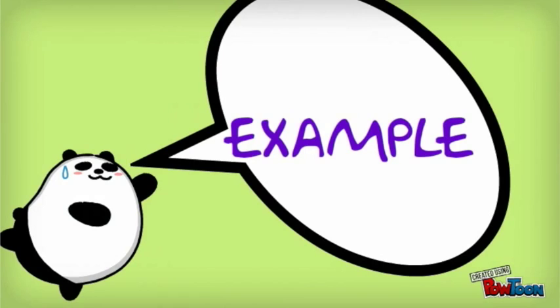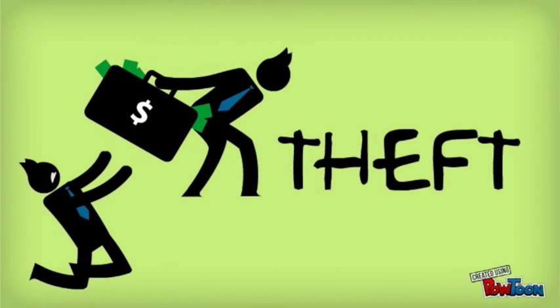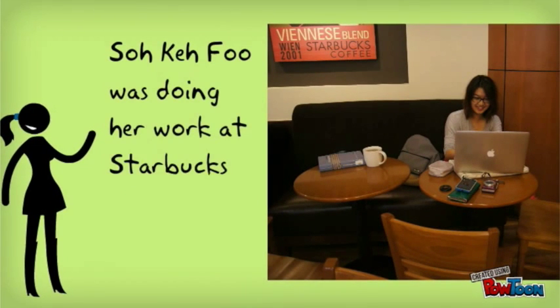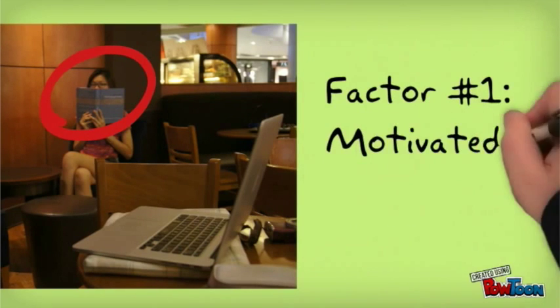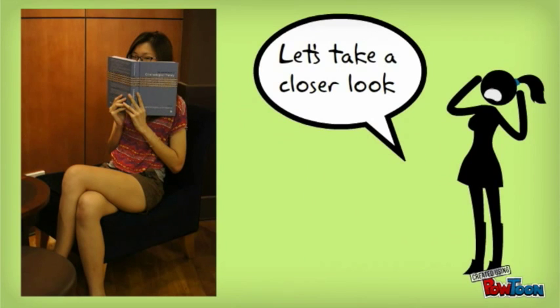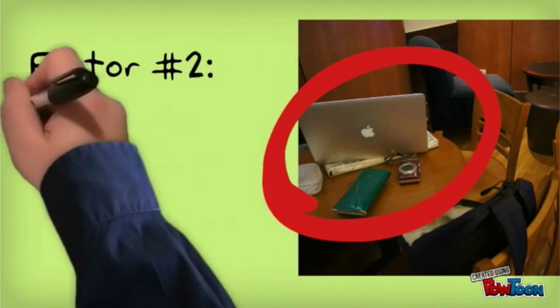Let's explain it further with an example. So SoCarefu was doing her work at Starbucks. And who do we have here, a potential offender? Just look at her creepy and intense eyes. So the second factor we have is target suitability.